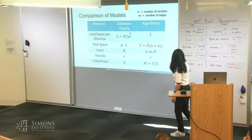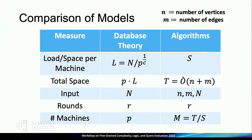The complexity measures we really want to minimize are the number of rounds and the space per machine. We are considering total space that is near-linear in the size of the graph — up to polylog factors — where the graph size is defined in terms of n, the number of vertices, and m, the number of edges. The number of machines can then be calculated as the total space divided by the space per machine.